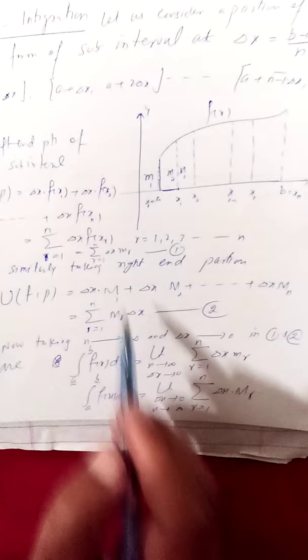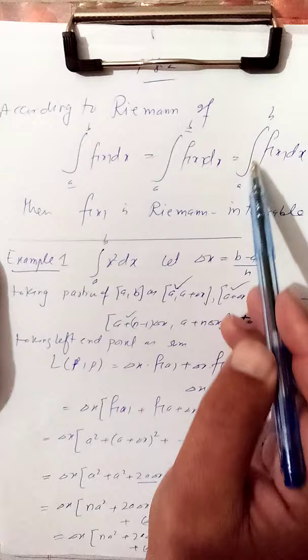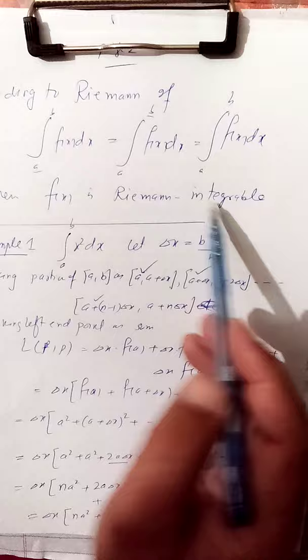Putting these things into relations one and two, we get what is known as the lower integral and the upper integral. Riemann says if the upper and lower integrals are equal, this is equal to the integral from a to b. We say that a function f(x) will be Riemann integrable if the upper integral equals the lower integral.